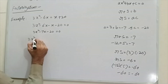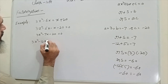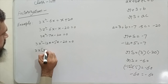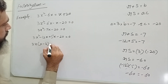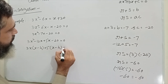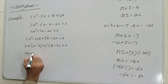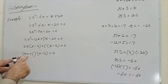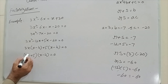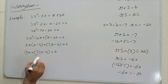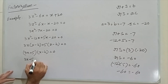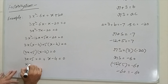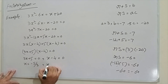Now we rewrite the equation as 3x² minus 12x plus 5x minus 20 equals 0. Factoring: 3x(x minus 4) plus 5(x minus 4) equals 0, giving (3x plus 5)(x minus 4) equals 0. So the solutions are x equals minus 5 over 3 and x equals 4.